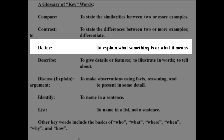Next, we have define — that means to explain what something is or what it means. When I ask you to define a word, you tell me what that word means. For example, define an apple: it's a fruit that's red or green, grows on a tree in a certain climate, takes three months to develop. Or give the definition of the American Declaration of Independence: it's a document that explained the reasons why the American colonies were separating from England and starting their own country.